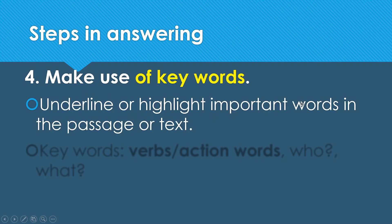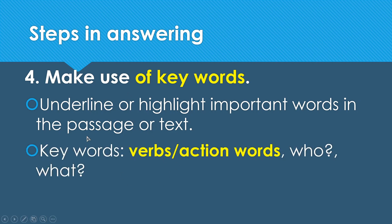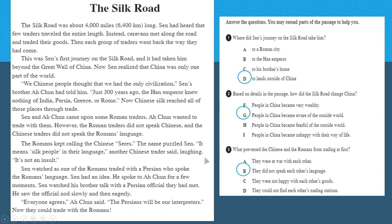Step four: make use of keywords. Underline or highlight important words in the passage. If there are character names, underline them; if there are settings or places, underline them; if there are important details, underline them. Keywords can be verbs or action words — like 'struggled,' 'cared,' 'abandoned' — and they help you look for who and what, which are the main details.